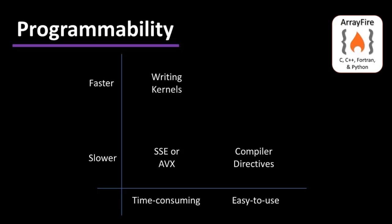As a baseline, SSE or AVX instructions on the CPU are time-consuming to write and won't give the data parallel performance of a GPU. Writing GPU kernels in CUDA or OpenCL leads to much faster code but is likewise time-consuming. In the opposite corner, compiler directives have become popular — the claim being that sprinkling a few fragments in your code lets the compiler figure out how to run well on the GPU. While you might get some benefit, there is simply no compiler today capable of automatically generating good, fast GPU code from standard serial CPU code.